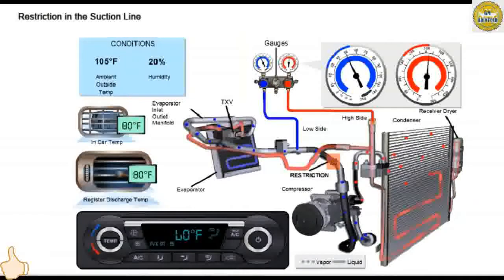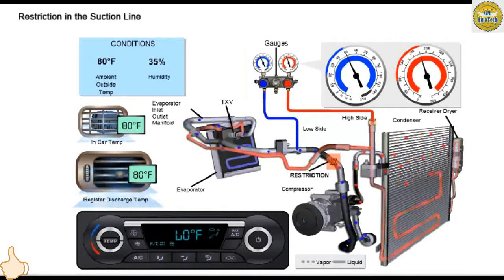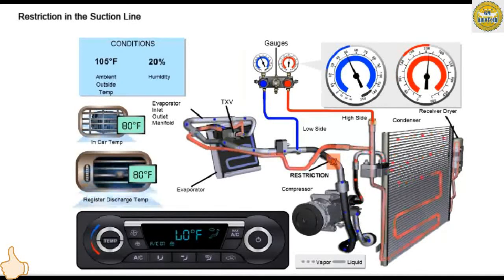A restriction in the suction line between the compressor and low-pressure service port will cause high side pressure to be normal to low, and the low side pressure will be normal to high. When ambient temperature is 27 degrees Celsius (80 degrees Fahrenheit) and relative humidity is between 30 and 60%, the high side gauge will read between approximately 230 PSI and 95 PSI. Low side pressure will read between approximately 21 PSI and 50 PSI.